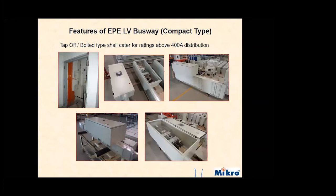We also have tap-off units for about 400 ampere and up to 1,600 amps. The difference is that tap-off units are fixed at the factory and then delivered to site, whereas the plug-in box is installed at the site.